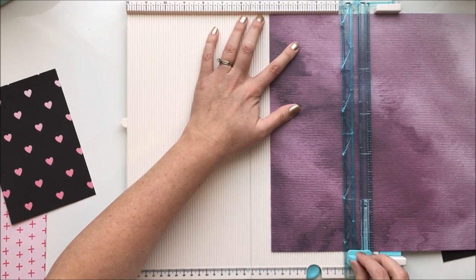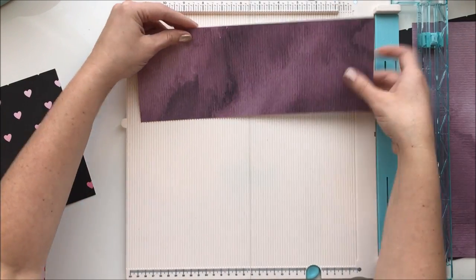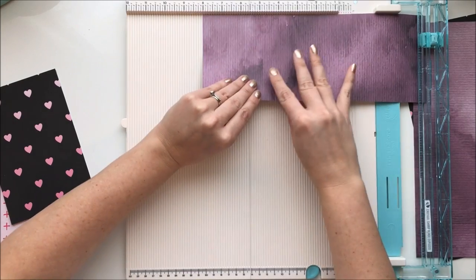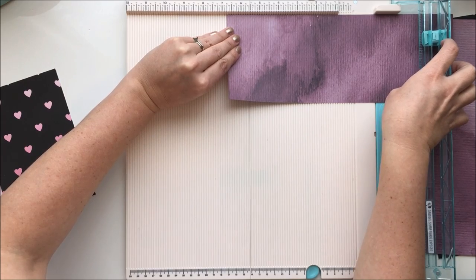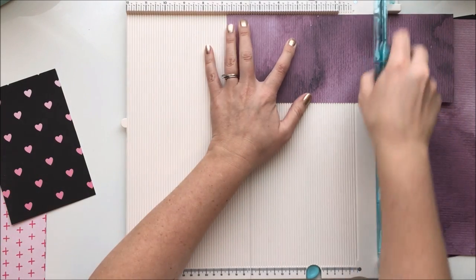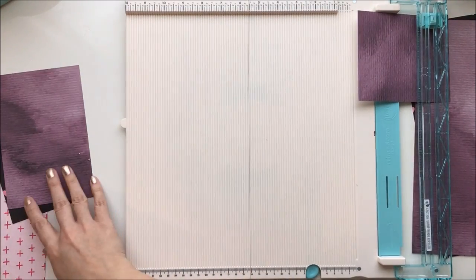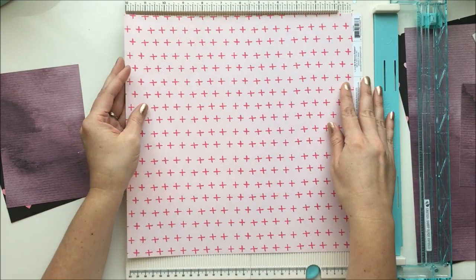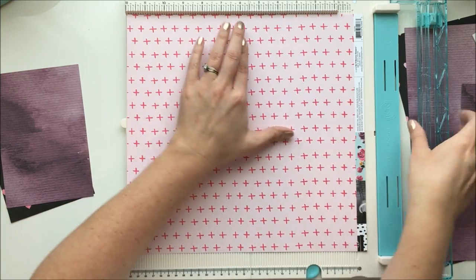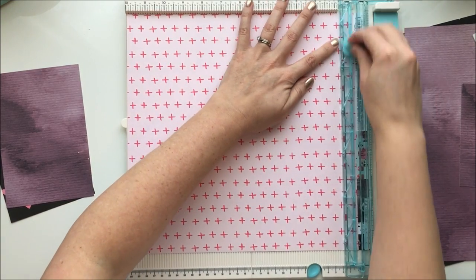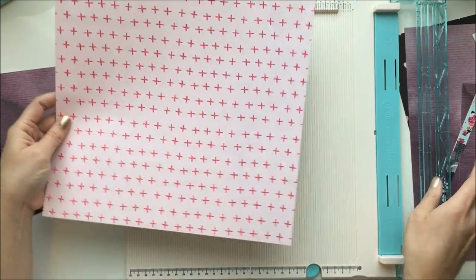Something you're going to want to consider is when you're looking at the pattern on the pattern paper, how is it going to sit in your planner? I made the mistake the first time I was playing with some very pretty paper that I cut it in such a way that the pattern looked sideways. You want to make sure that because the pages are vertical in your planner that the orientation of your pattern paper makes sense to you vertically as well. So just take your time, don't be super fast and careless like I was.